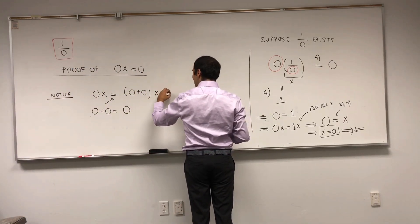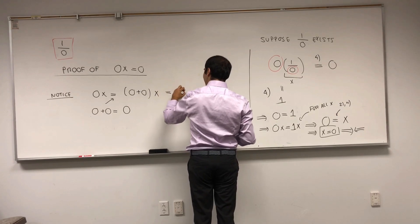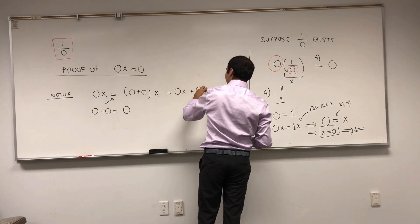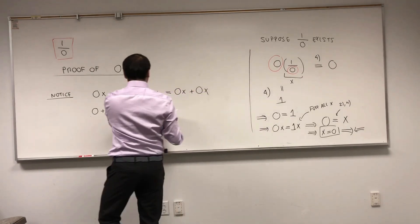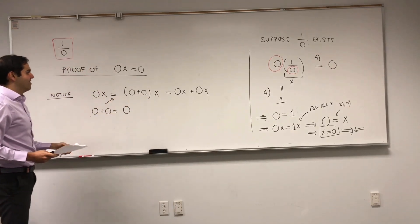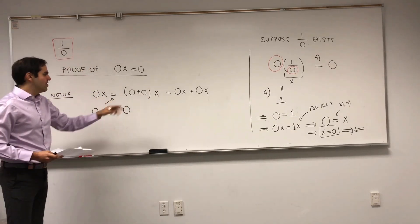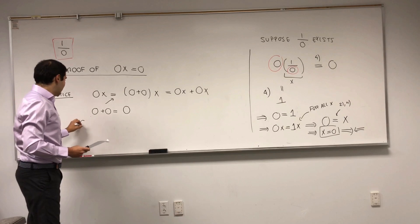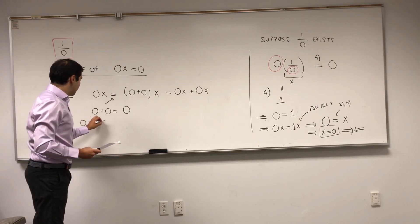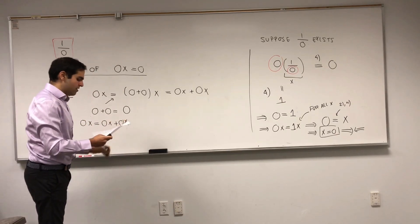And, now, what we can do, we're allowed to foil it out. That's one of the properties of what's called a ring. So, if you multiply and you add, you can foil it out. So, you get that 0x equals 0x plus 0x.